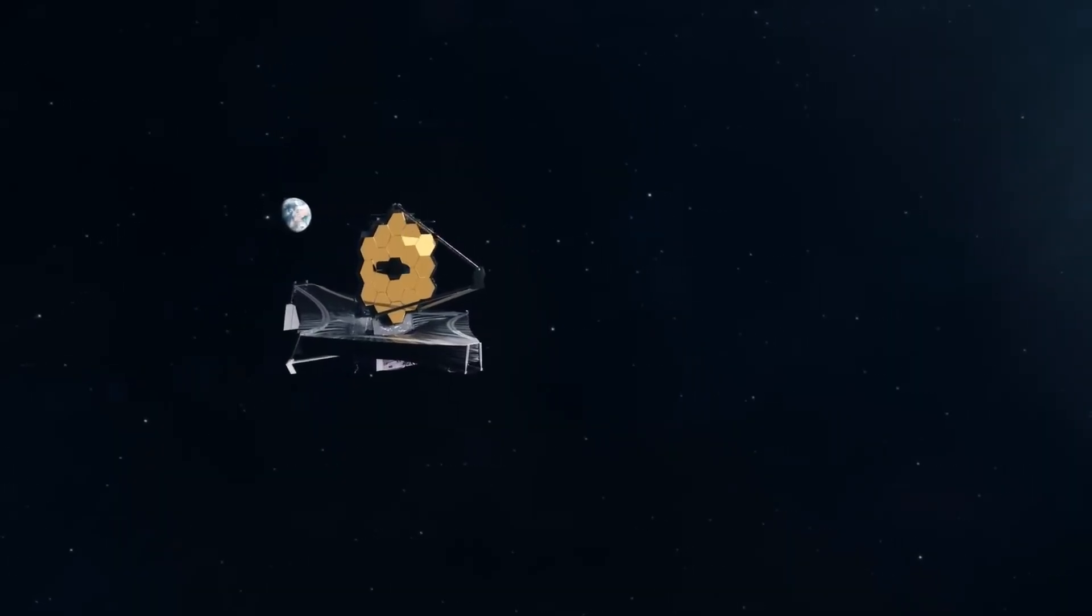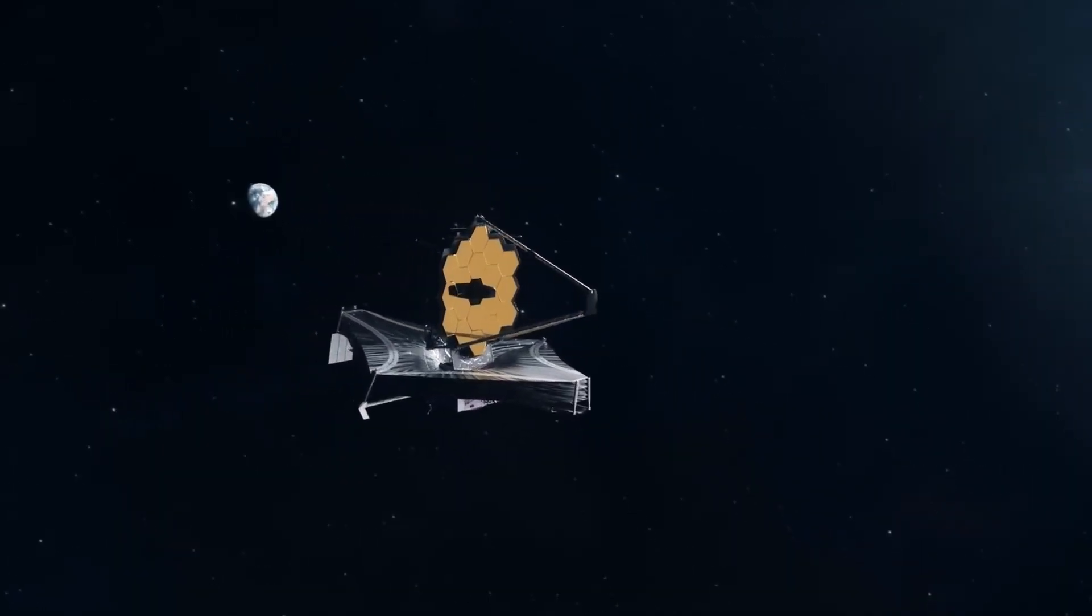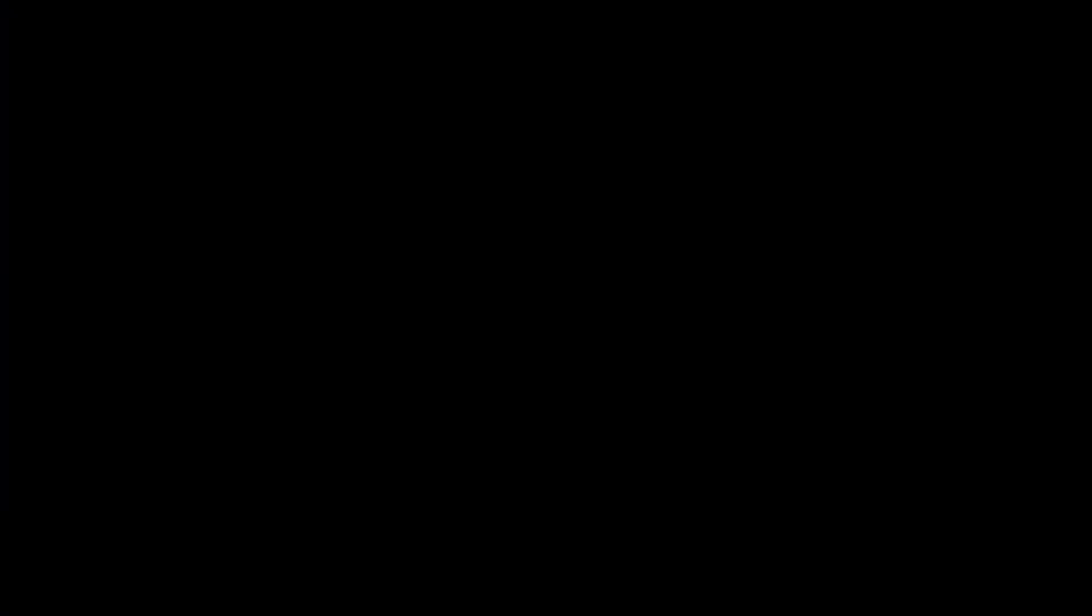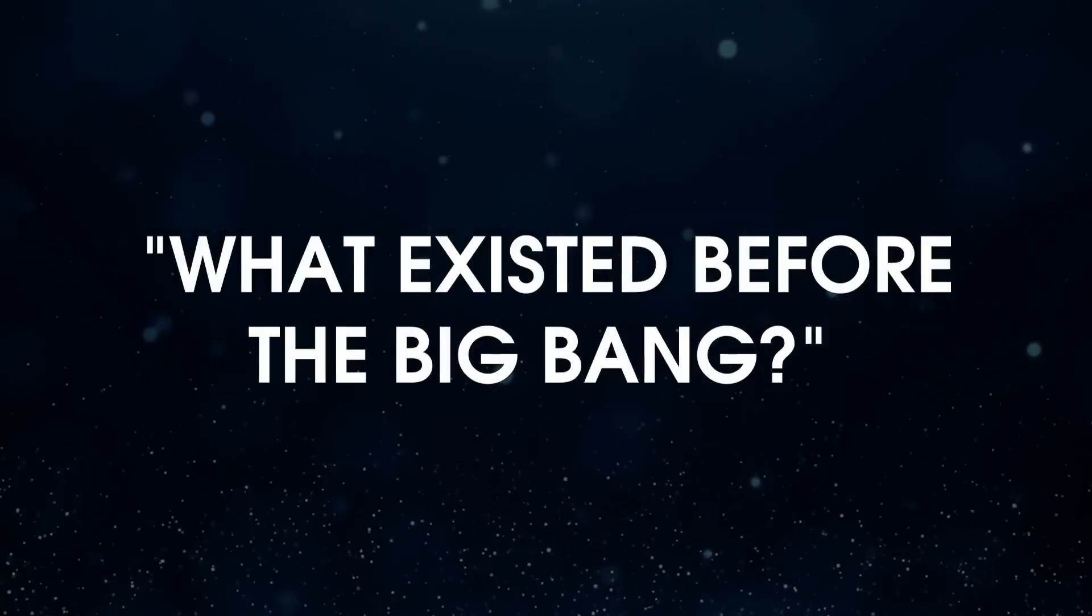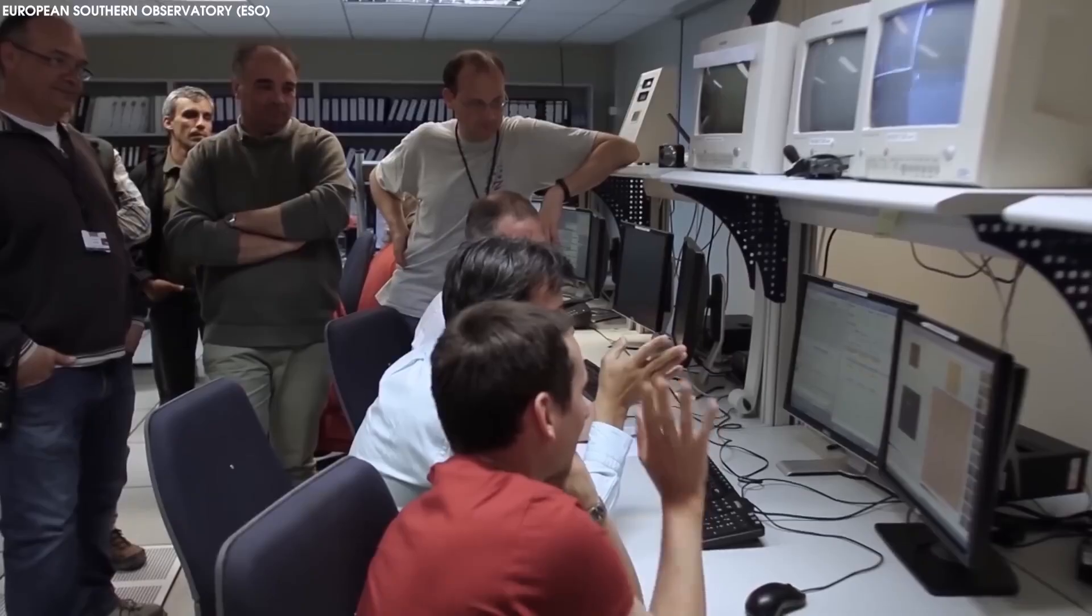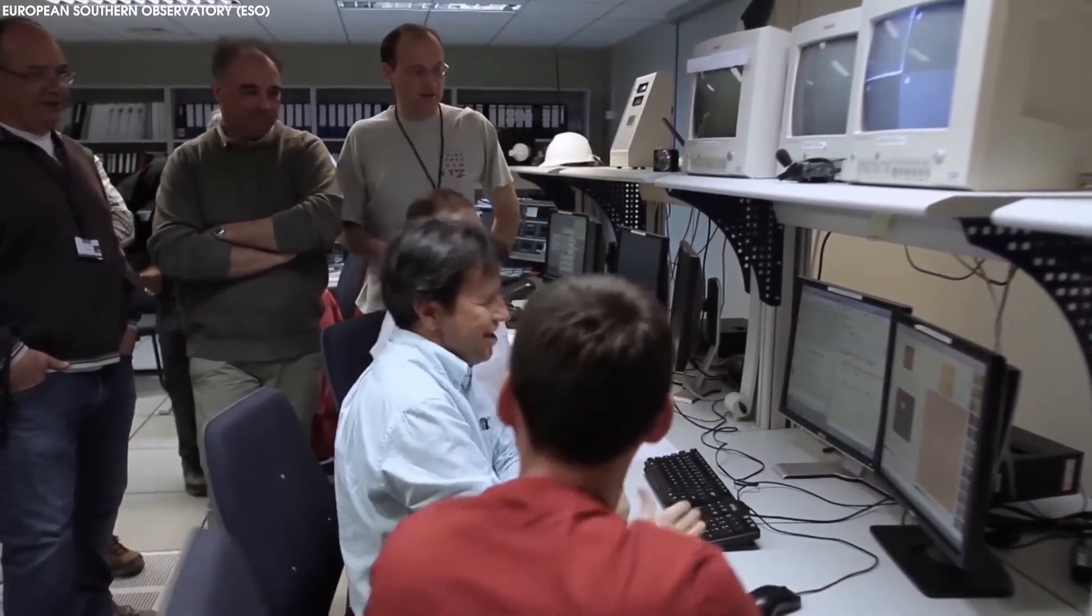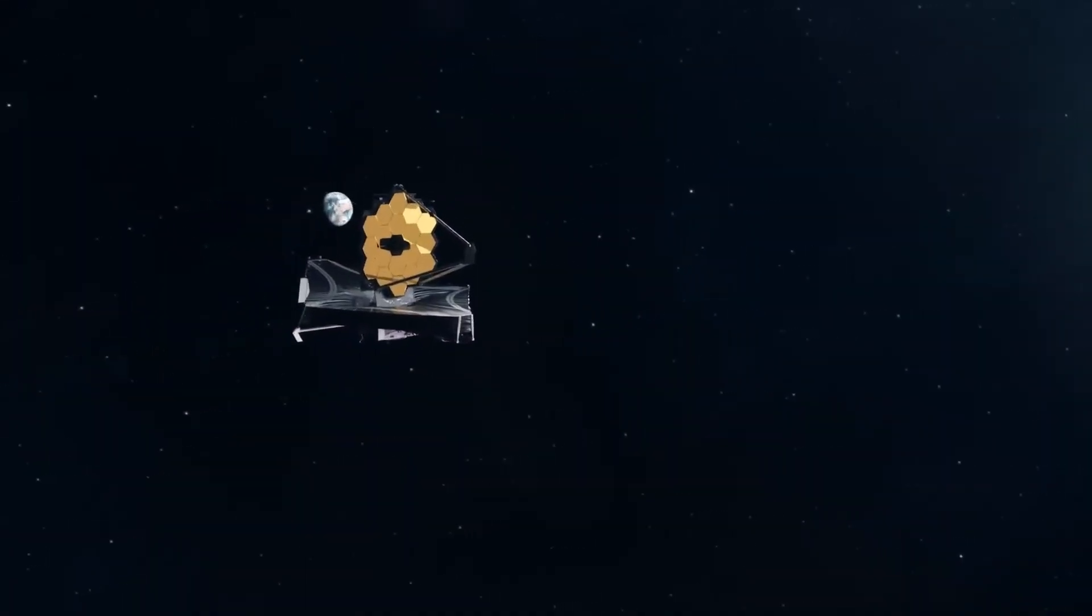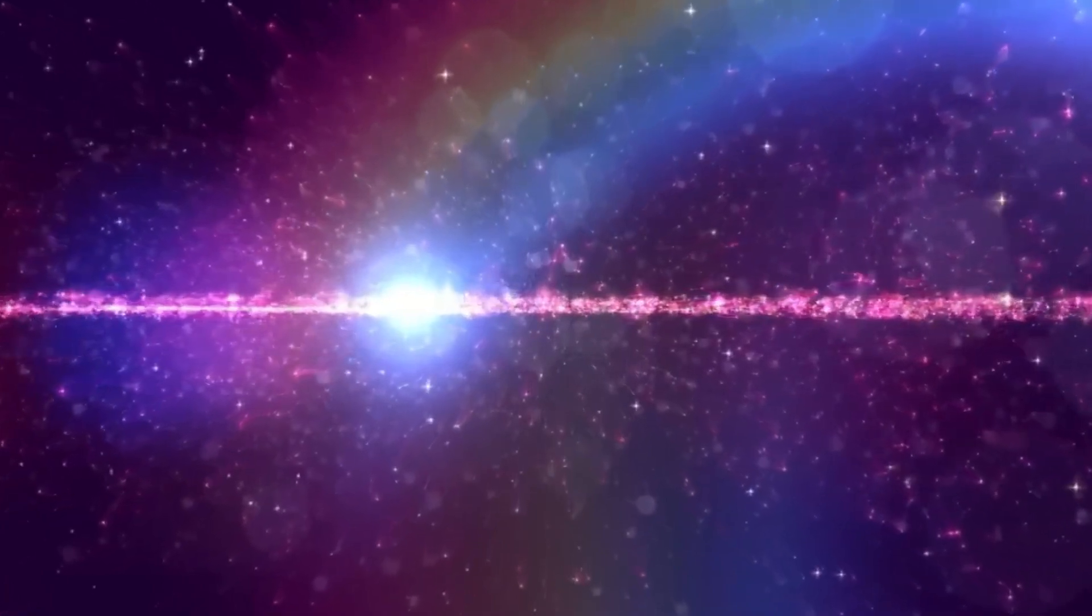But recent mapping efforts suggest that the universe is lopsided, with more fluctuations in some areas than in others, supporting the idea that our universe bubbled off from another universe. Other models revolve around the formation of the pre-Big Bang singularity itself.